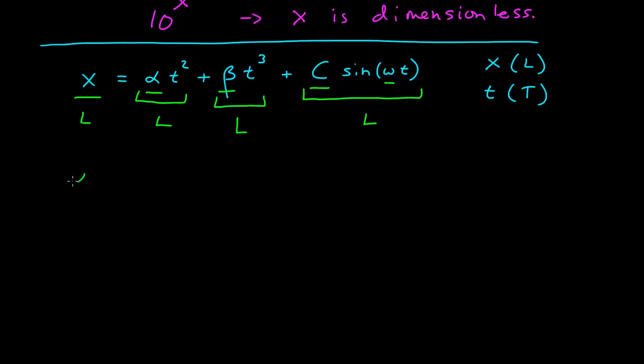I know that this alpha t squared must be a length. Now how I would do this is I would say, okay, so this is equal to the dimension of alpha, which I'll put in parentheses, which is unknown.